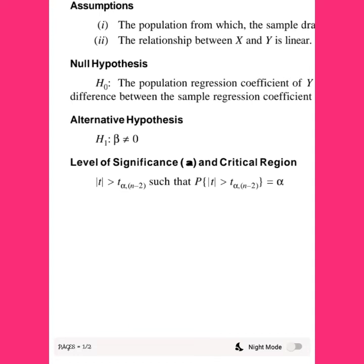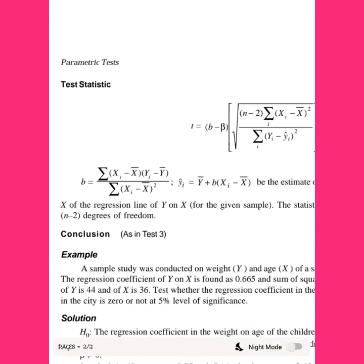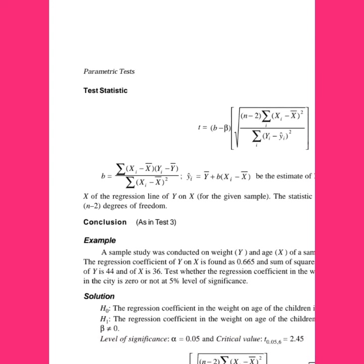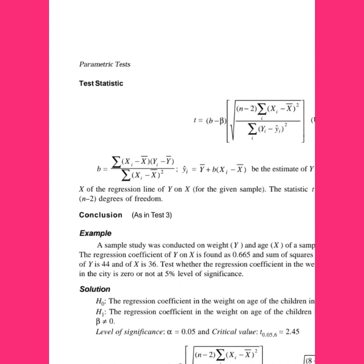The absolute value of t must be compared to the tabulated value t alpha, n minus 2. The decision is based on this comparison. The test statistic T is calculated using the formula: the sample regression coefficient minus the population beta capital, multiplied by the radical of n minus 2.